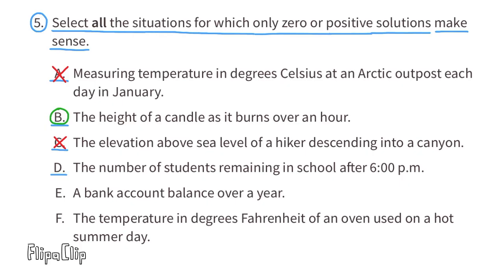D. The number of students remaining in school after 6 o'clock p.m. Well, either there's going to be a few students, or there's going to be 0 students. It's impossible to have a negative amount of students remaining at school. So the only answers that make sense for this one are 0 or positive solutions.